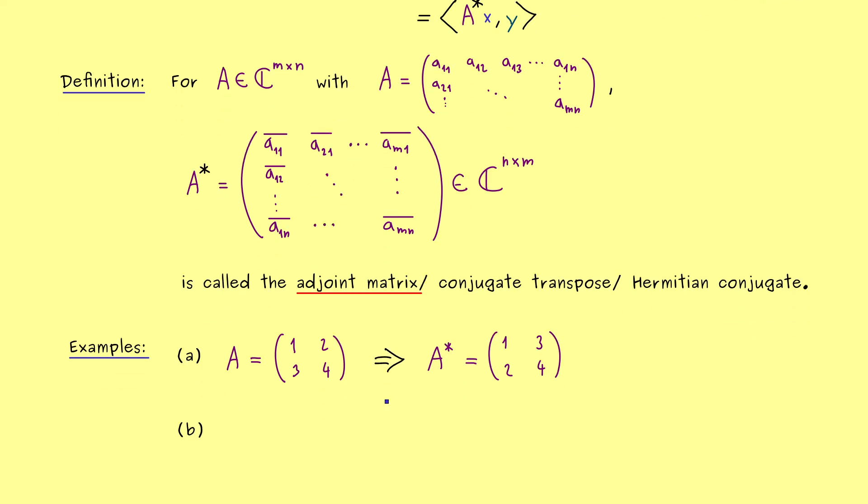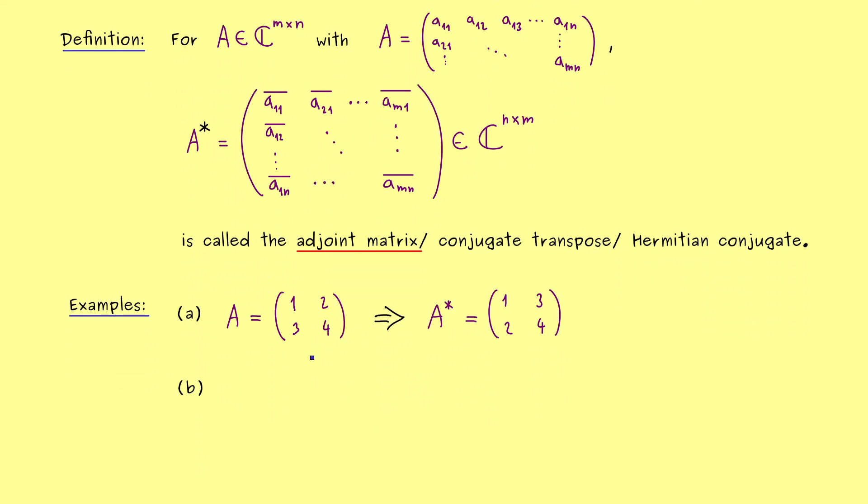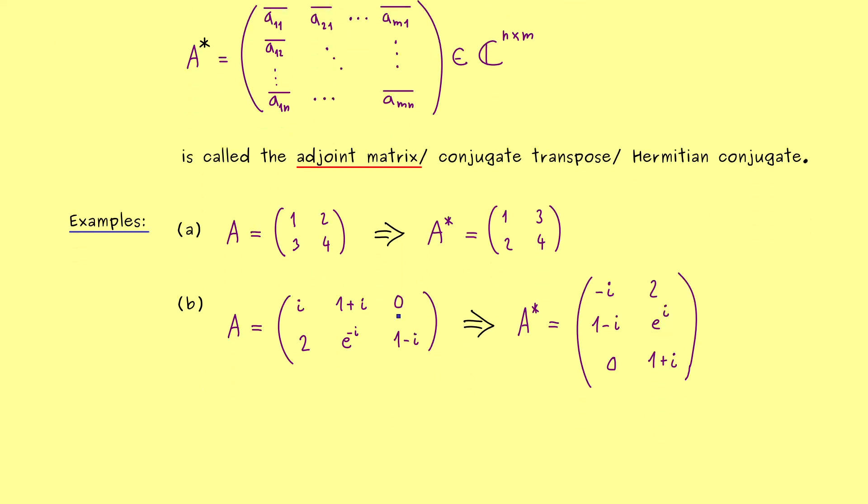Therefore it might be more interesting if we look at an actual complex example. So complex but not complicated, which means we should put in some i's. So you see, what we can do is something like that. So this is a 2x3 matrix, which means that A star is now a 3x2 matrix. And the first element is now not i, but minus i, the complex conjugate. And of course, that's how it works with the other i's as well. So what you do is you do the transpose as usual, and then you use the complex conjugation in each entry. So you see, it's a nice calculation scheme.